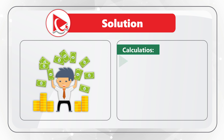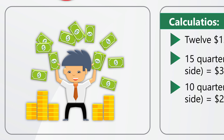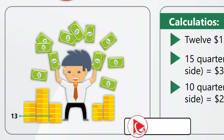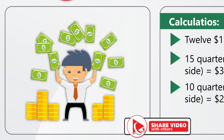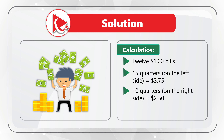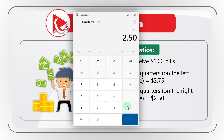I counted 12 one-dollar bills and 25 quarters. Let me count them for you. Dollar bills: 1, 2, 3, 4, 5, 6, 7, 8, 9, 10, 11, 12. For the quarters — left side has 15 quarters: 1 through 15. Right side has 10 quarters: 1 through 10. Now for the math: 12 one-dollar bills equals $12. 15 quarters equals $3.75. 10 quarters equals $2.50. $12 plus $2.50 plus $3.75 equals $18.25.